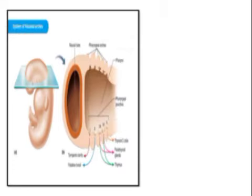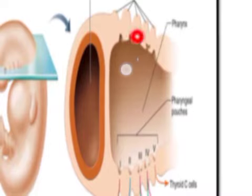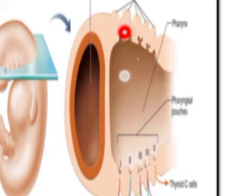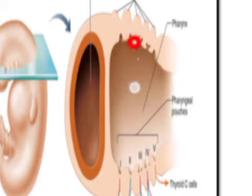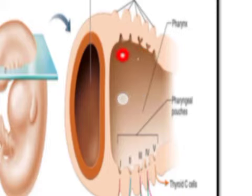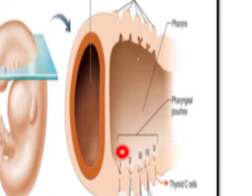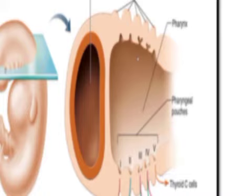These cleft-like structures inside the embryo are the pharyngeal pouches. They are furrow-like structures on the inner side — these are nothing but the gill pouches. I will tell you more about how many there are.